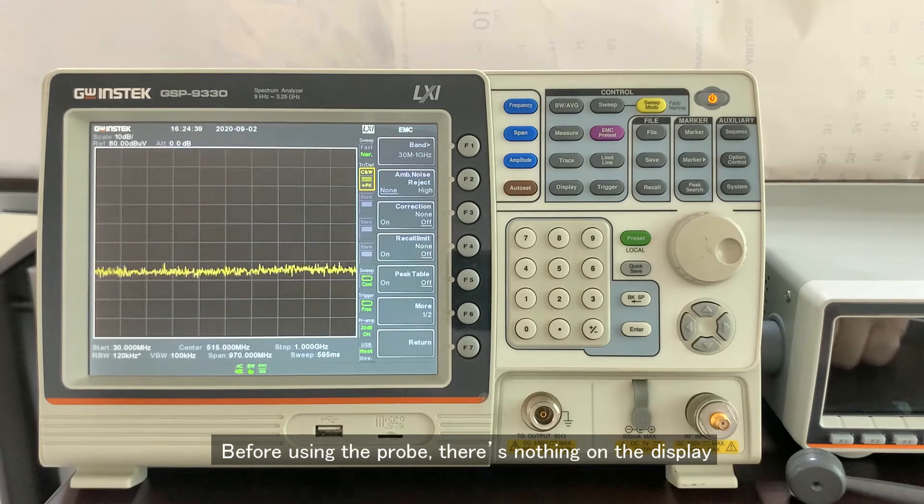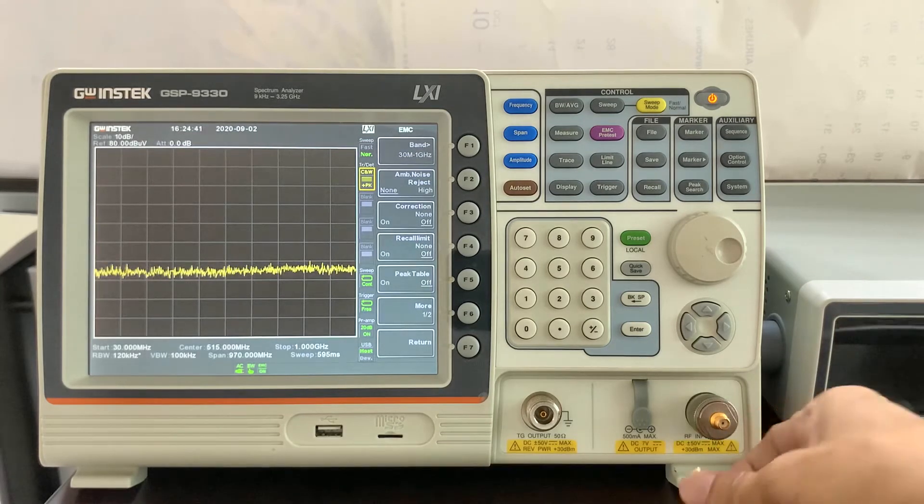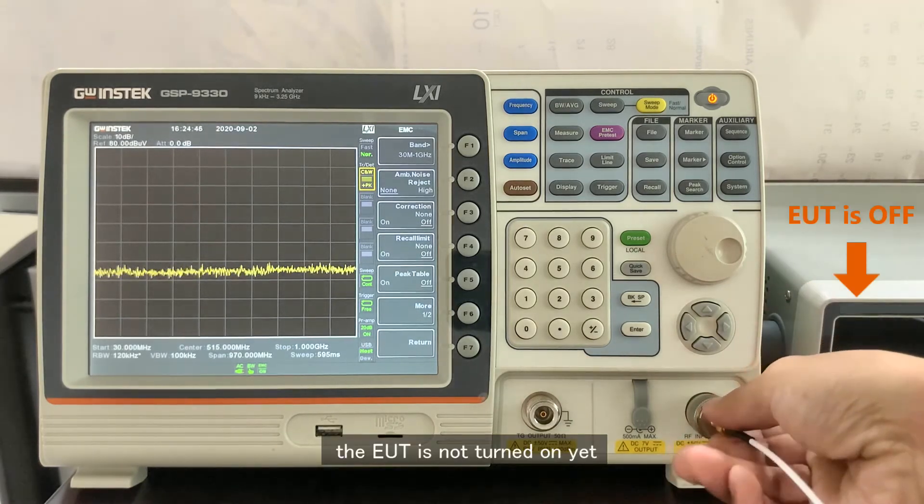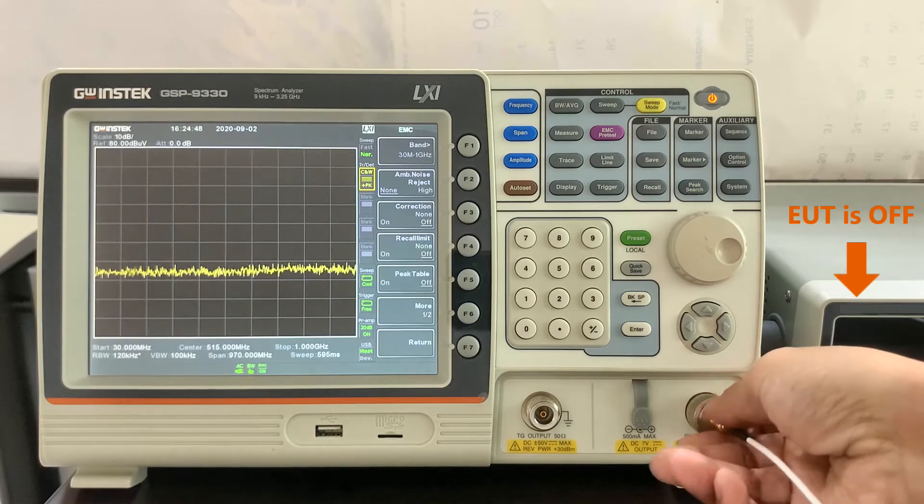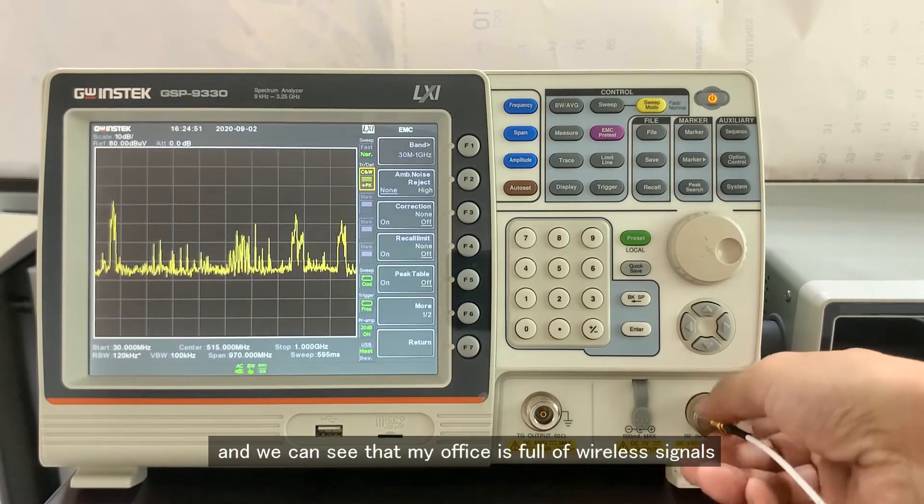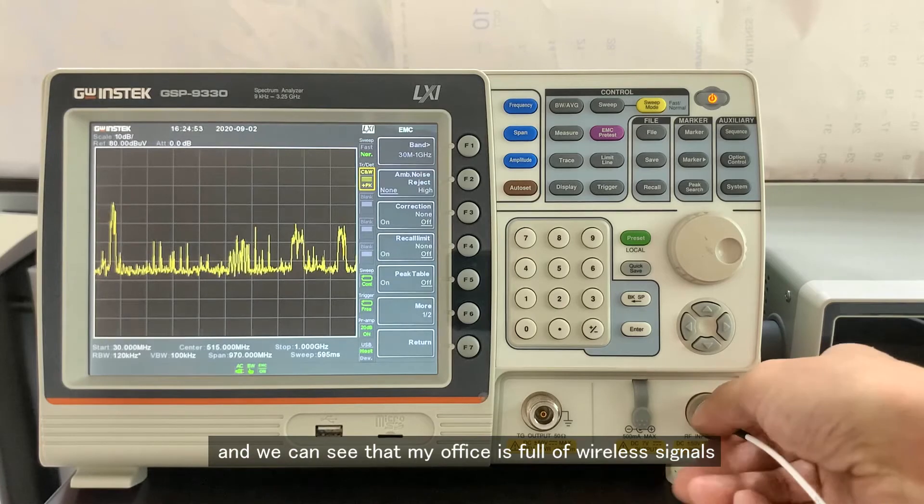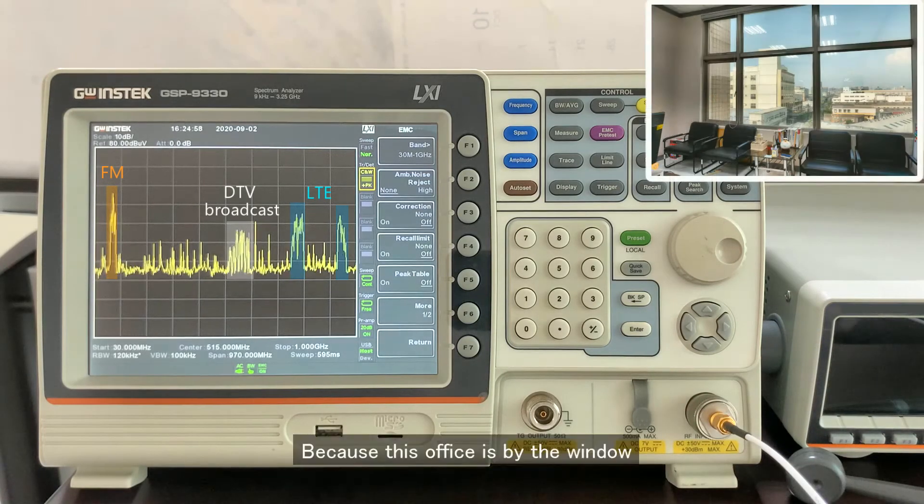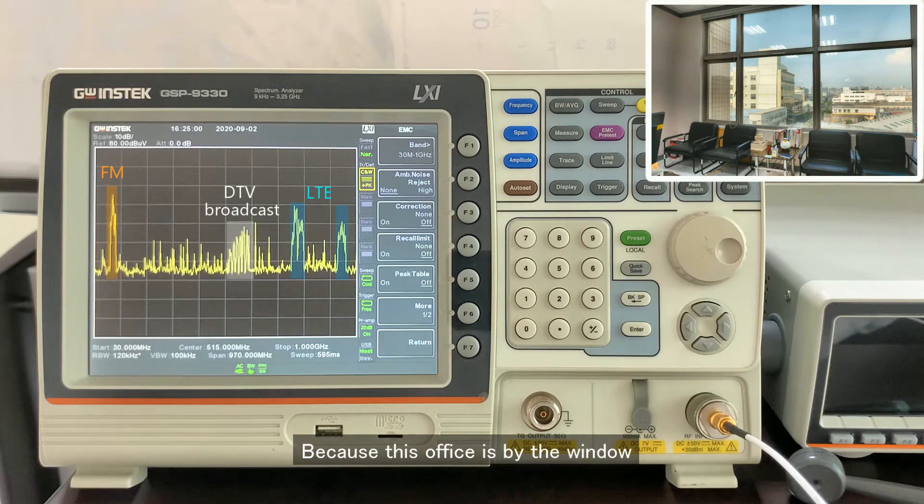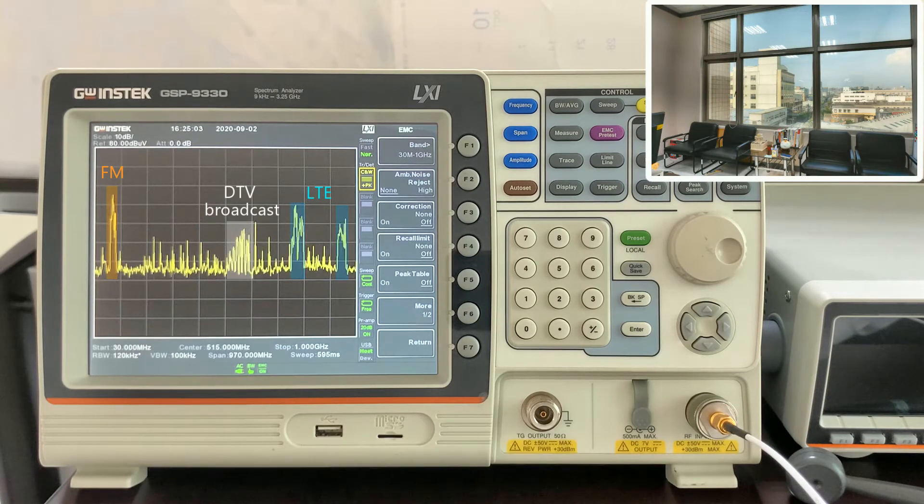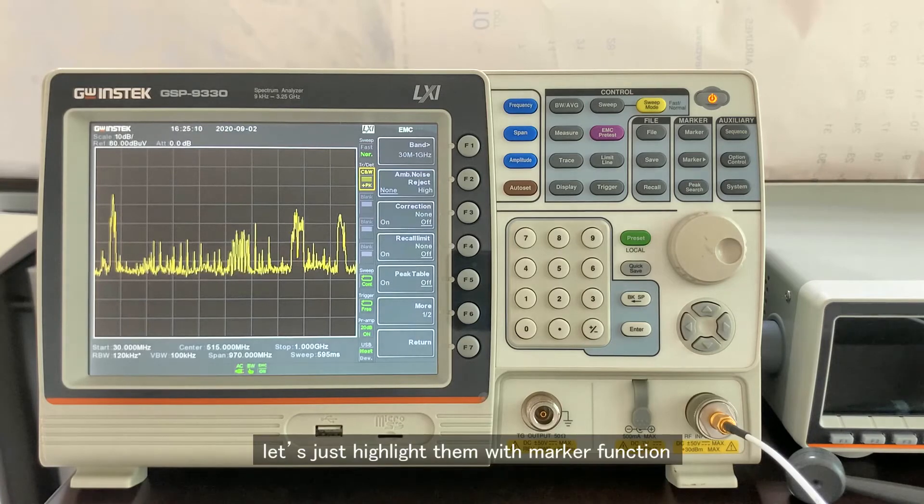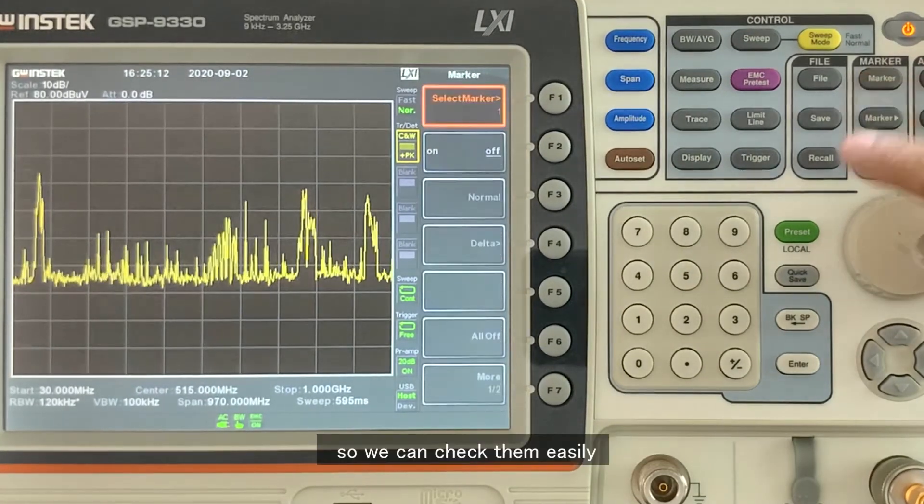Before using the probe, there is nothing on the display. Now we connect the probe to the GSP-9330. The EUT is not turned on yet, and we can see that my office is full of wireless signals. These are FM signals and others. Because this office is by the window, lots of wireless signals are detected. Since our focus of today is the 400MHz and 600MHz, let's just highlight them with the marker function so we can check them easily.